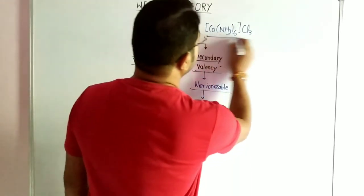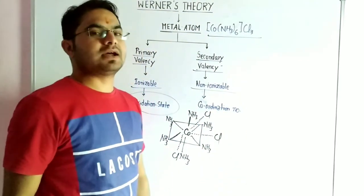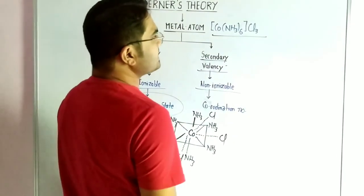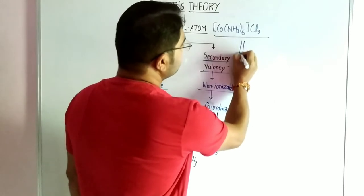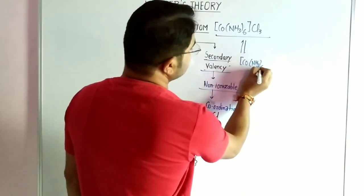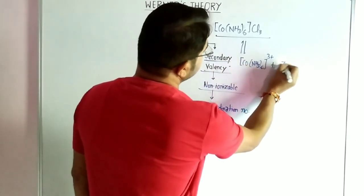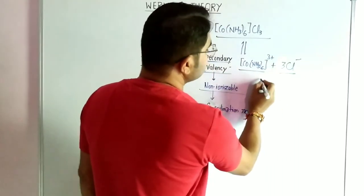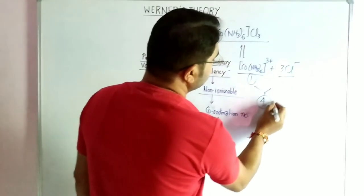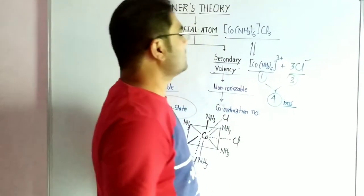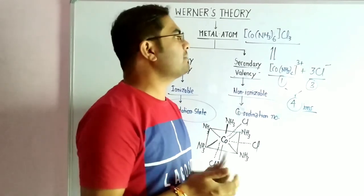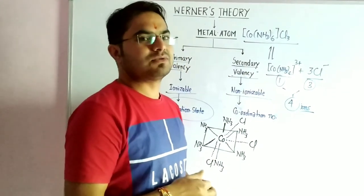A common question asked about this theory is: how many ions per mole of the complex are present in solution? For this complex, when it dissociates, [Co(NH3)6]³⁺ gives 3 positive ions and 3 Cl⁻ negative ions. The number of ions total would be 1 (for the complex cation) plus 3 (for Cl⁻), giving 4 ions total. This depends on how the complex dissociates into its ions. Thank you.